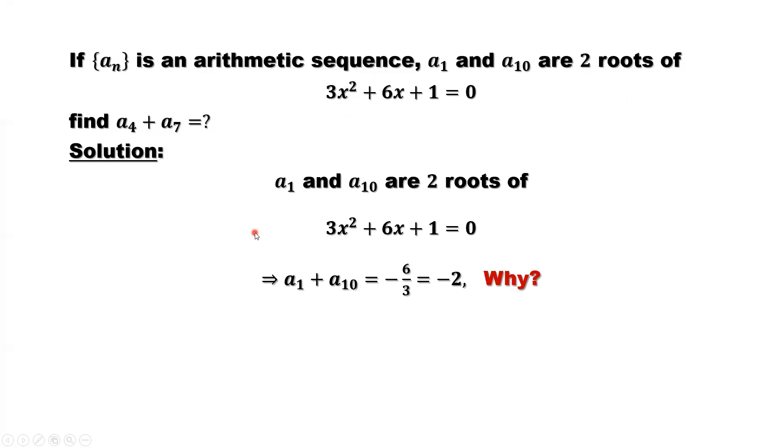We claim the sum of two solutions. A1 plus A10 equals negative 6 over 3 equals negative 2. Why?